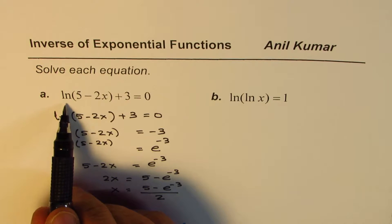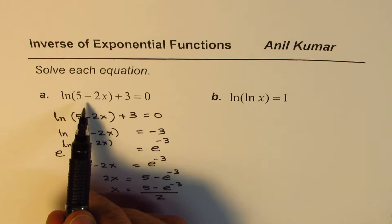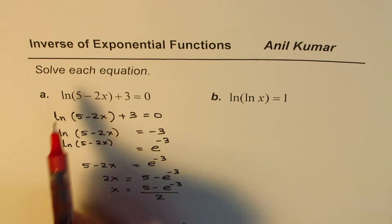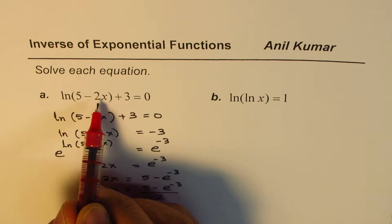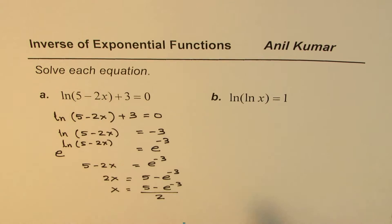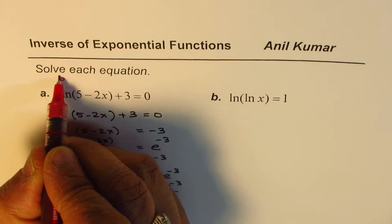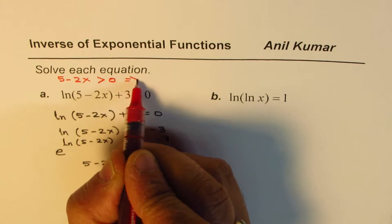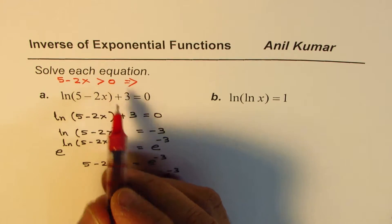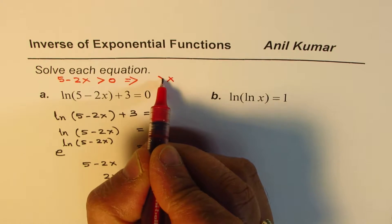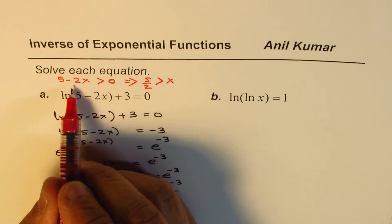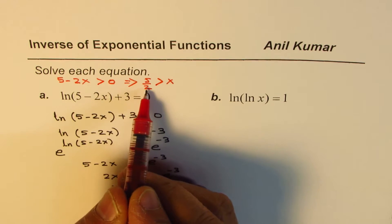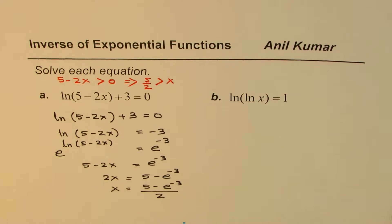One more thing to remember: the function ln is only defined for values which are positive, so it has a restriction. The restriction here is that 5 minus 2x must be greater than 0. Solving this: 5 is greater than 2x, so x is less than 5 over 2.